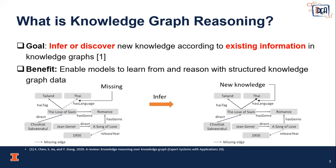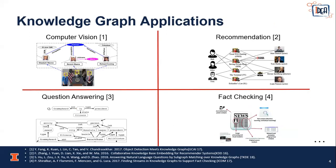For example, in Knowledge Graph completion, we can predict the missing relations according to the existing information. Knowledge Graph has many applications, for example, computer vision, recommender systems, question answering, fact checking, and so on.